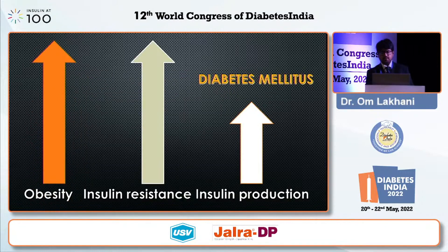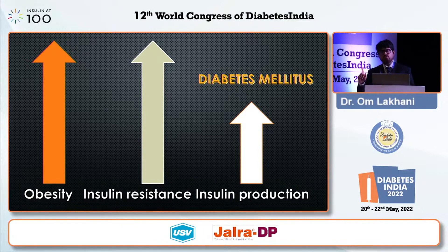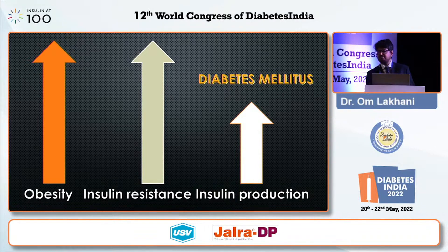Obesity increases insulin resistance, and so do other factors. But if insulin production is not able to match up with insulin resistance, that is when diabetes develops. There are a lot of patients who are obese but not diabetic, and patients who are not obese yet are diabetic. So if obesity alone or insulin resistance alone led to diabetes, every obese person should be diabetic — but that's not the case.